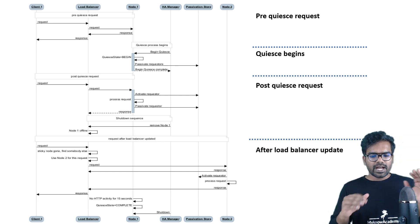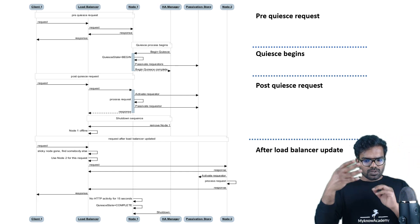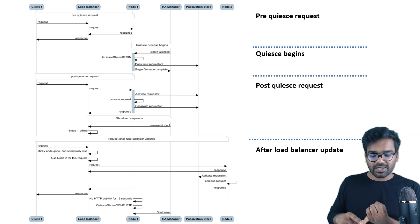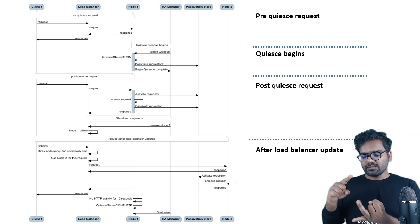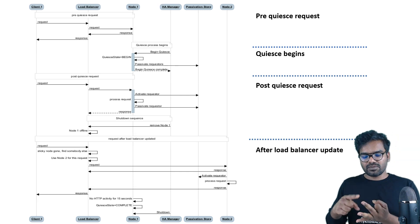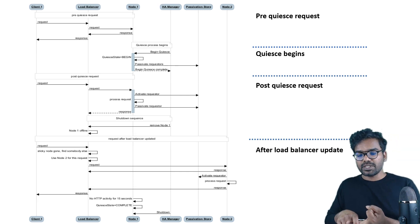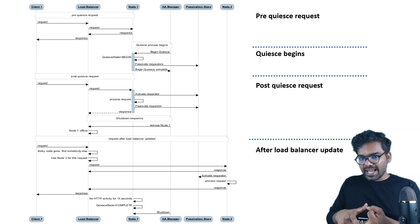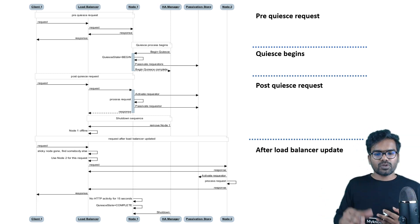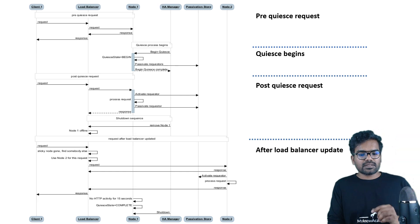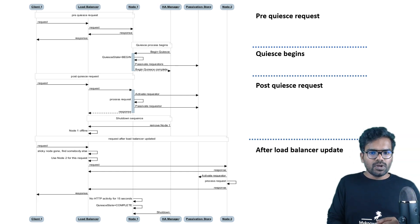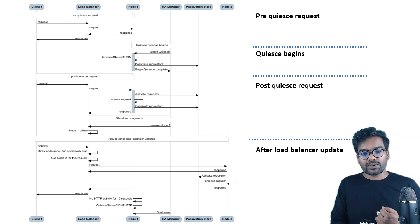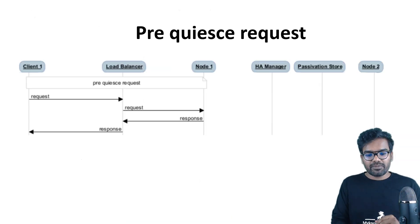So six participants are available in total. If you look at this picture there are four stages which I marked on the side: first is the pre-quiesce request; then when quiesce begins, what happens; then the post-quiesce request; and finally if the node is removed and the load balancer updates, what happens. I'm going to show you everything in detail across four different sections.